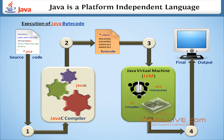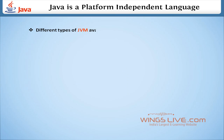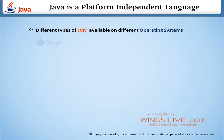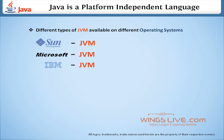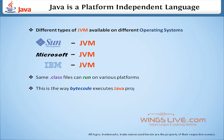This .obj file is used to generate the output. Different types of JVM are available on different operating systems, such as the Sun JVM, the Microsoft JVM, and the IBM JVM. Using the JVM, the same .class files can run on various platforms. This is the way bytecode executes Java programs and proves Java is a platform-independent language.